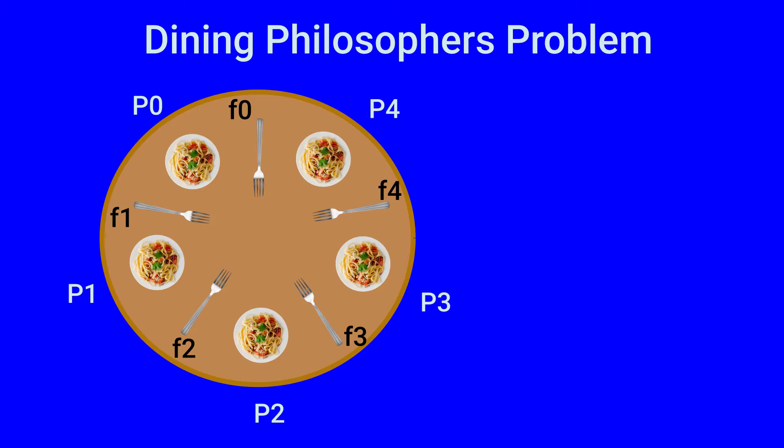If the lower numbered fork is not available, the philosopher blocks. So the case when all philosophers want to eat at the same time: philosopher p0 picks up fork f0, philosopher p1 picks up fork f1, philosopher p2 picks up f2 and p3 picks up f3.